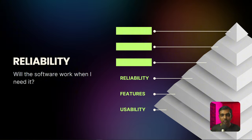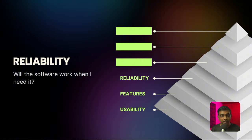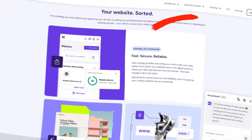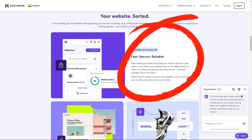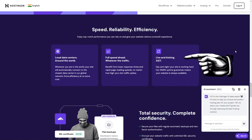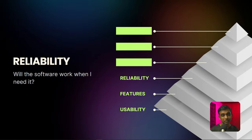Users want to trust that the software will work when they need it, which is fundamental to their sense of security, stability, and trust in the professional behind it. This incident proved to me the importance of offering reliable, stable service. This is also why many hosting platforms' primary marketing line is 99% uptime — because they understand how important reliability is for their clients.